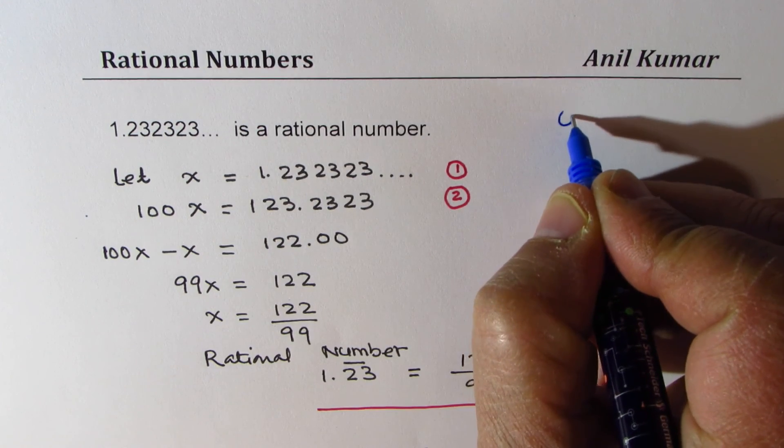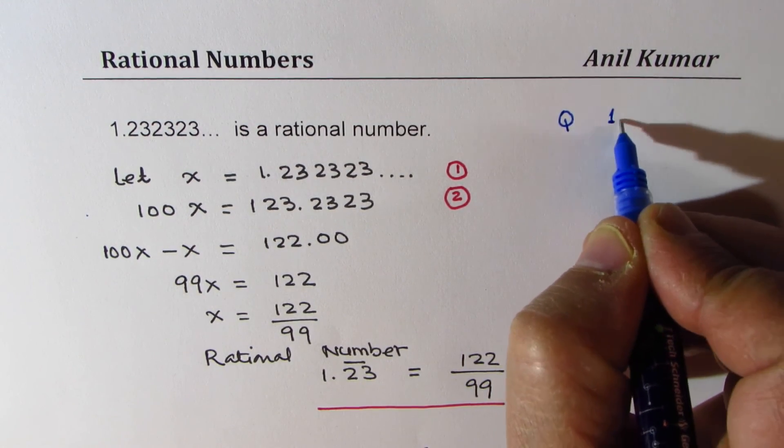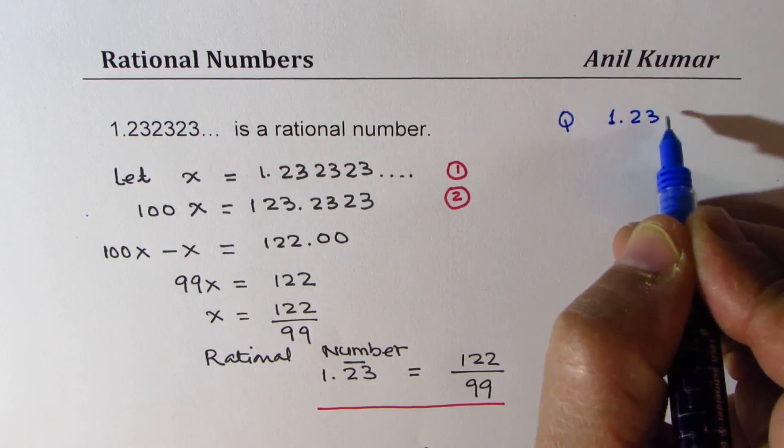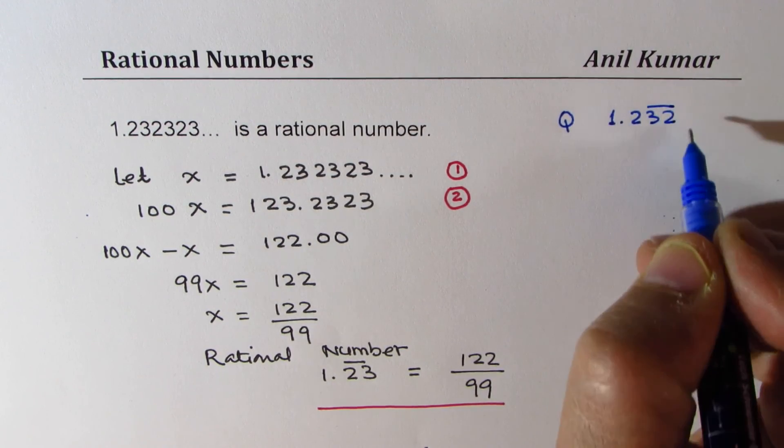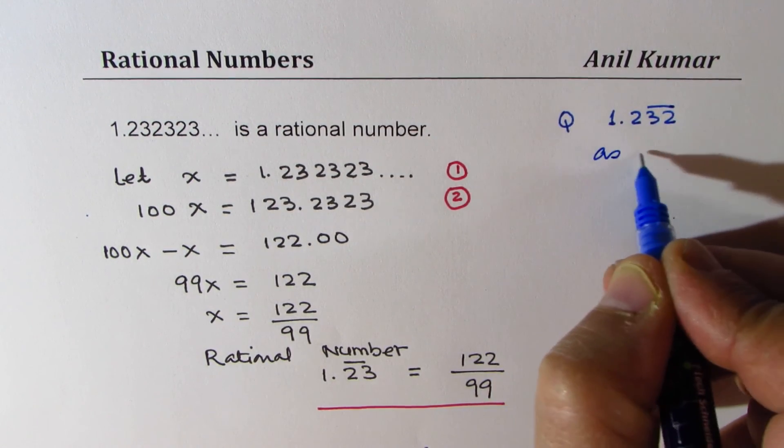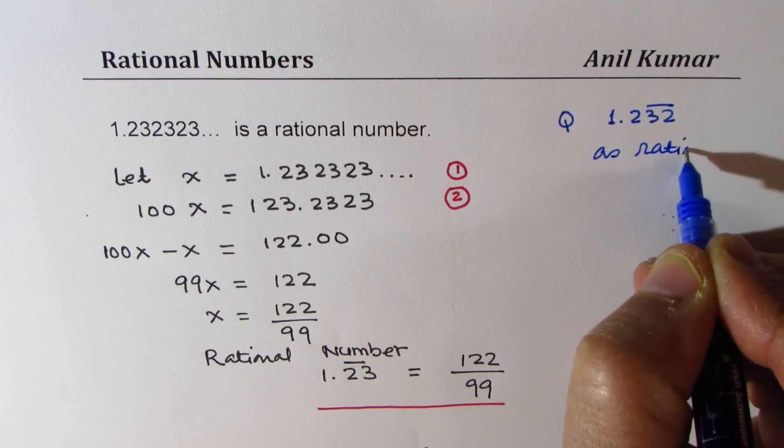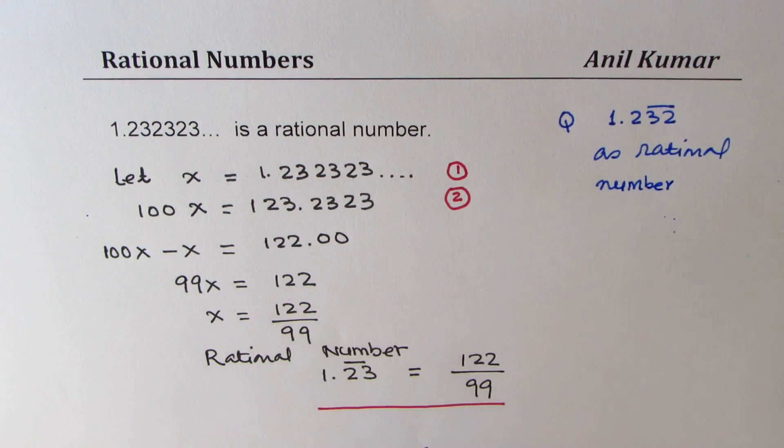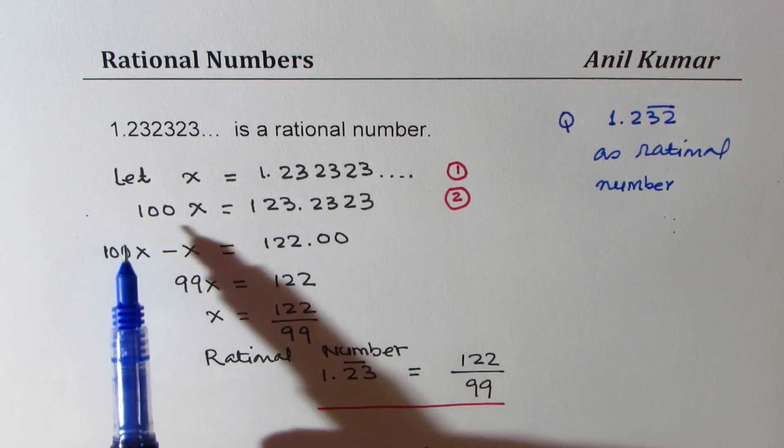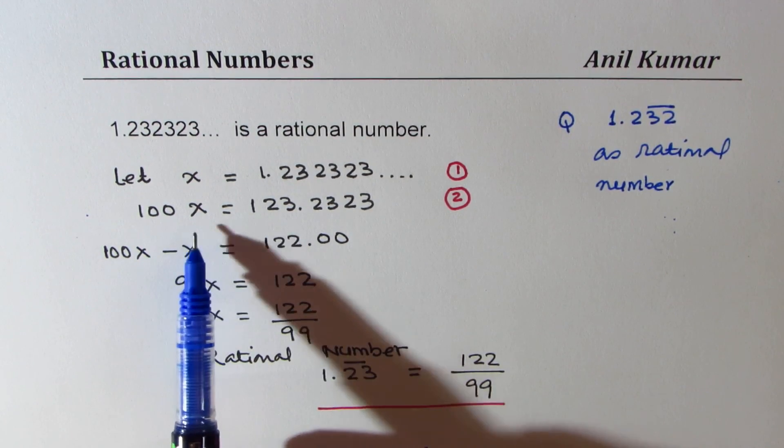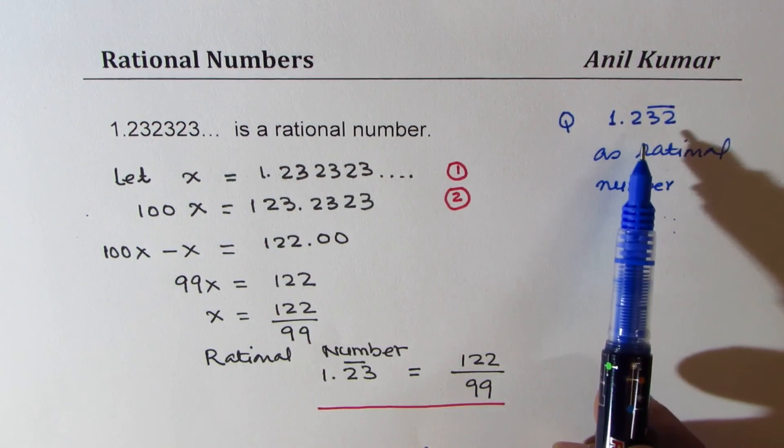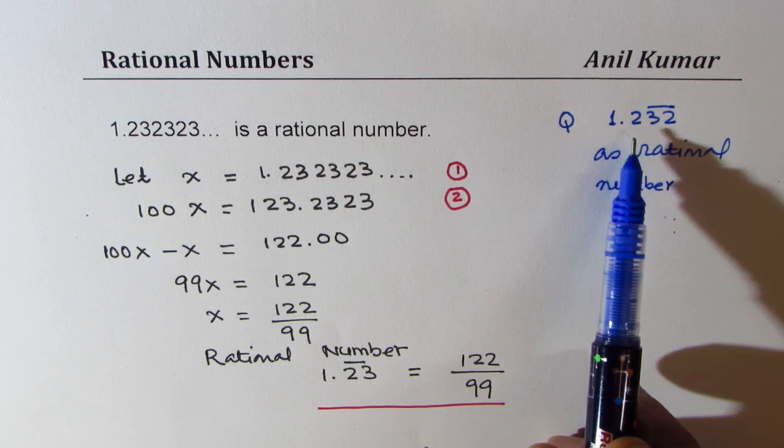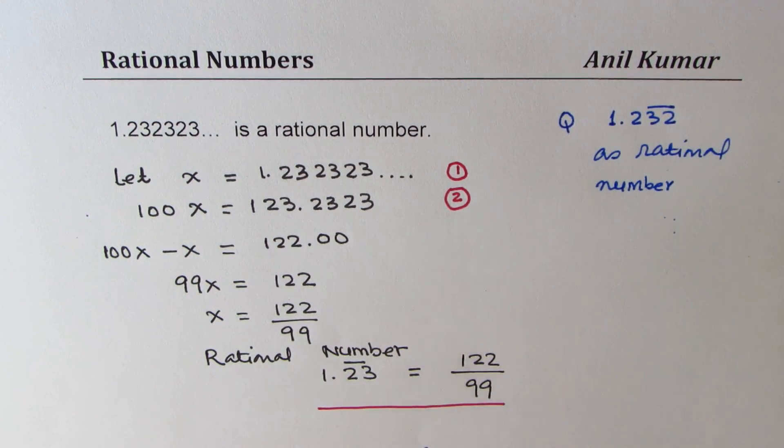Now, here's a question for you. This time, write 1.232 where 32 repeats as rational number. So that is your practice test question. So in this case, we will not multiply by 100 by some other number, right? So now think about a strategy to get 1.232323232 as a rational number.